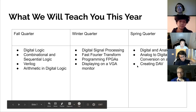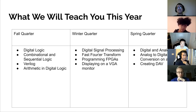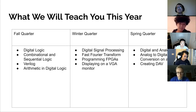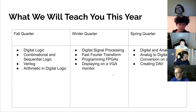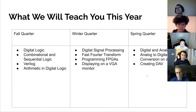So what are we going to teach you this year? During fall quarter, we're going to teach you about digital logic, Verilog, and arithmetic, which are the basic foundations for the rest of the project. Then in winter quarter, we're going to shift over into signal processing including the fast Fourier transform, working with FPGAs themselves, and inter-hardware interaction using the VGA monitor. And finally, in spring quarter, we're going to talk about digital and analog signals, how they're converted, and then we're finally going to make the impressive DAV.